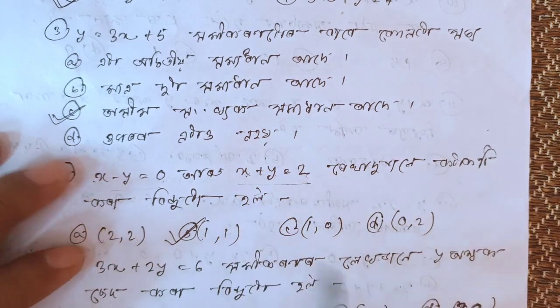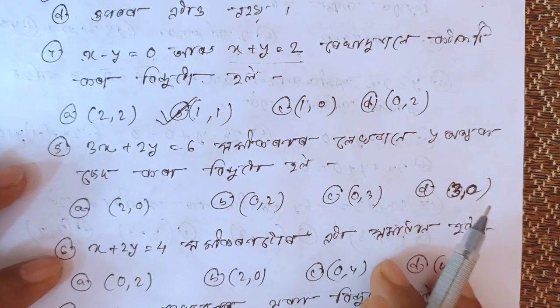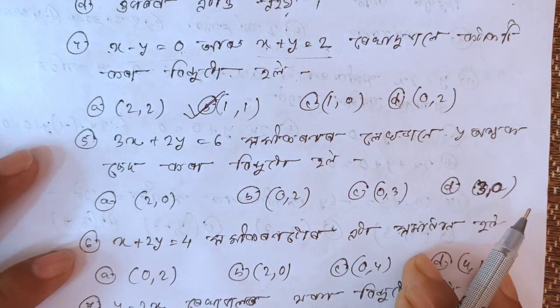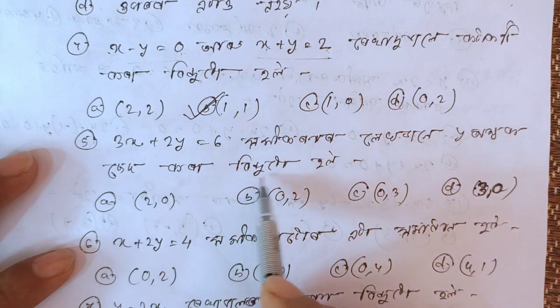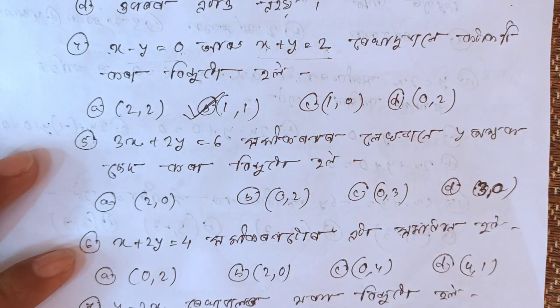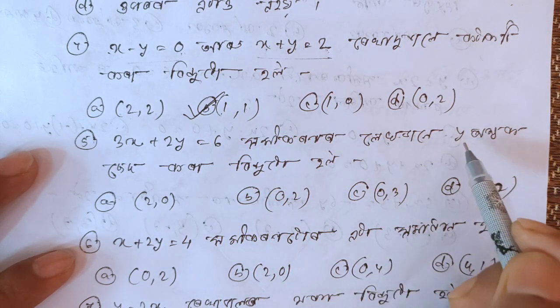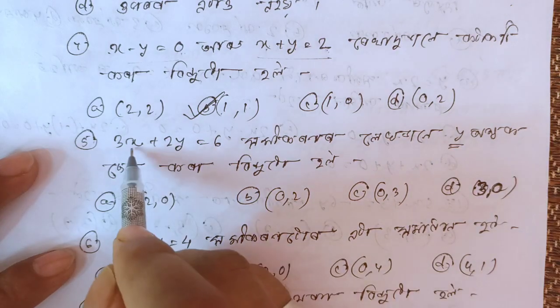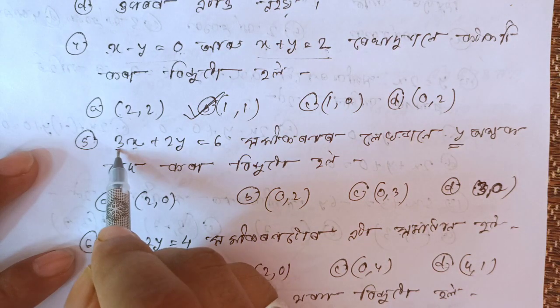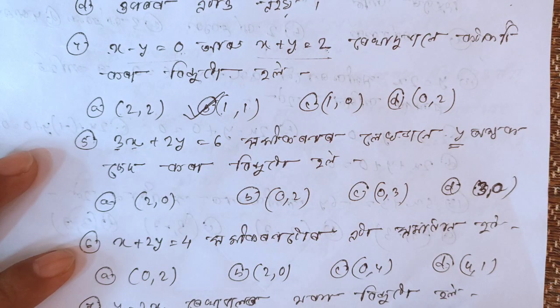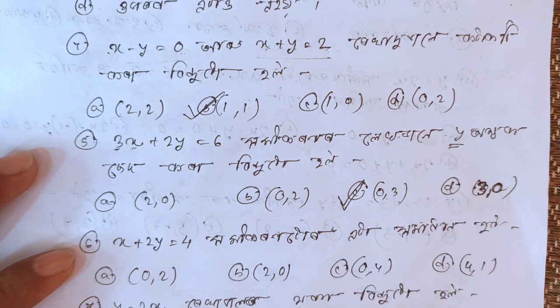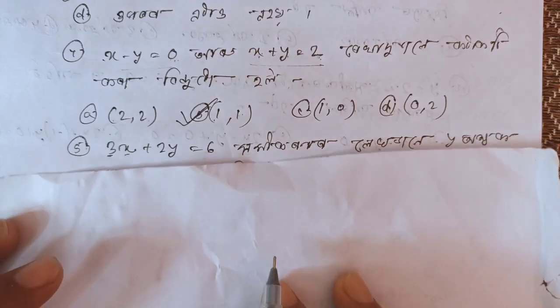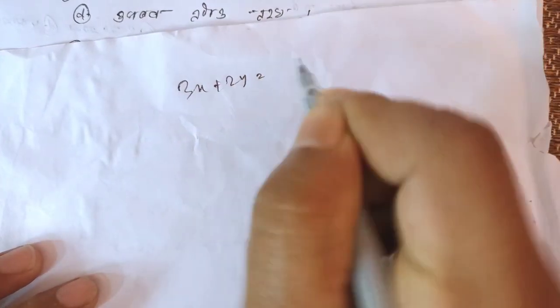Next, we have the option of b2. The question is 3x plus 2y equal to 6. Set the net to 2. This is the value of y. Set the net to 2: 0, 3.